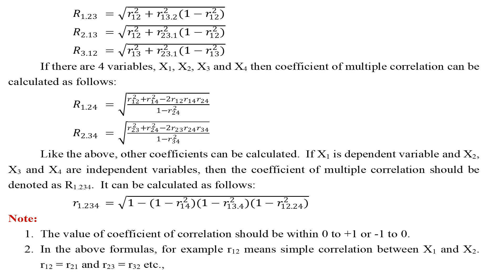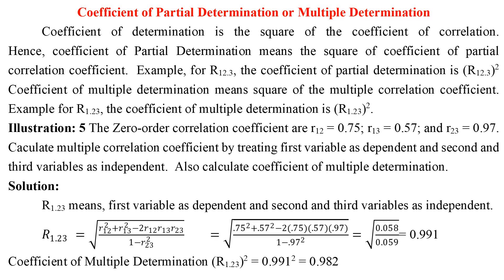Note: (1) The value of the coefficient of correlation should be within 0 to +1 or -1 to 0. (2) In the formulas, r12 means simple correlation between x1 and x2, and r12 = r21, r23 = r32, etc. The coefficient of partial determination is the square of the coefficient of partial correlation.